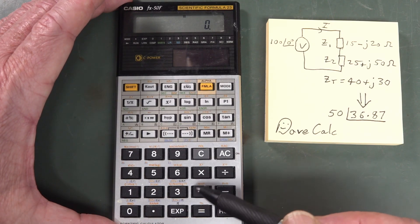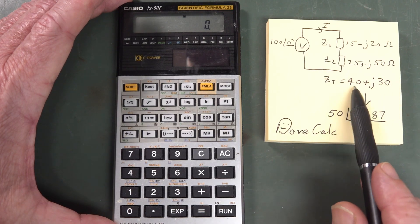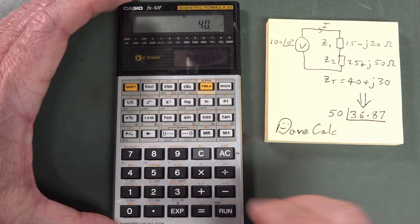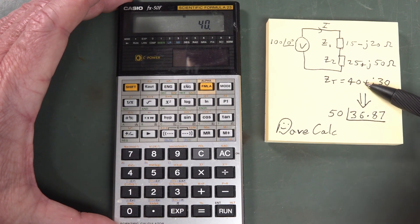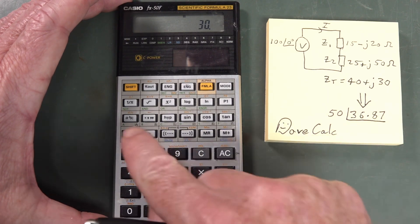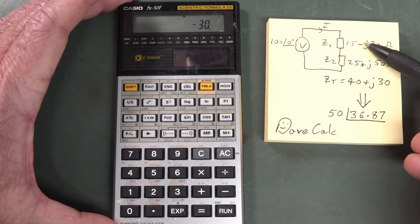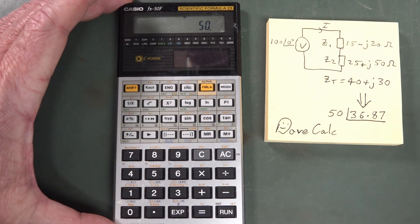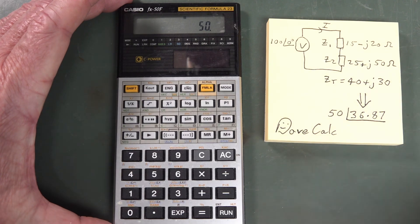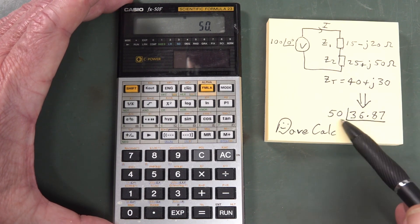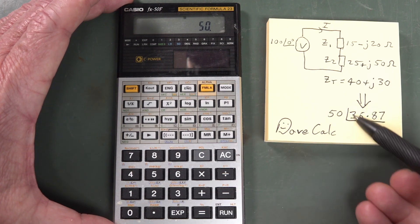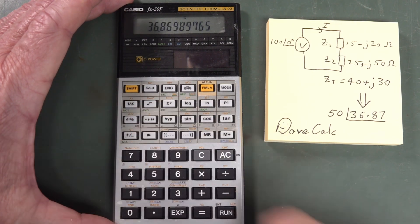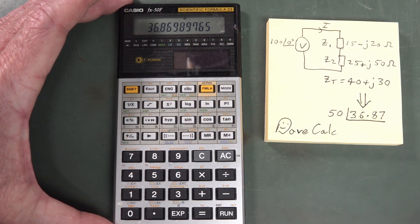We want the R to P, or rectangular to polar, button — it's a shift function. We first take our real component, so we go 40, then shift R to P — rectangular to polar. It knows it's in that mode and now it's waiting for the complex part, which in this case is plus 30. If it was minus J, we would put minus in, but it's plus 30. We simply press enter. It gives us our answer: first it gives us our real component, 50. The angular component in polar form is in the Y register, so we go shift XY. Bingo — 36.87 degrees. That's how you convert rectangular to polar.